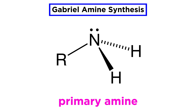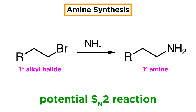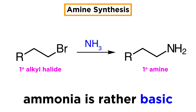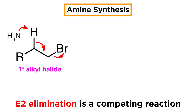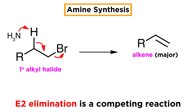First up is the Gabriel synthesis, which is a method of generating primary amines. Primary amine synthesis was problematic at one time. One could suggest that the SN2 reaction of ammonia with a primary alkyl halide should give the corresponding primary amine. However, ammonia is not only nucleophilic but also rather basic. If the alkyl halide has beta-hydrogens, elimination will compete, and large amounts of alkenes will be obtained via E2, alongside low yields of the desired amine.